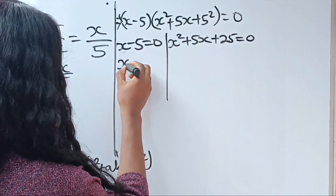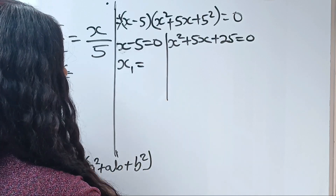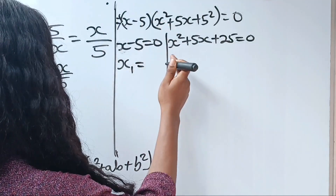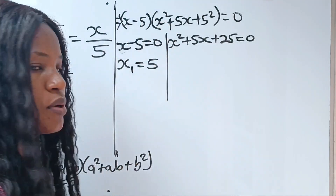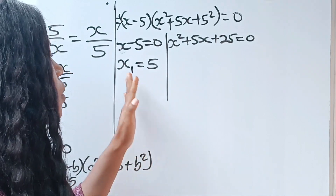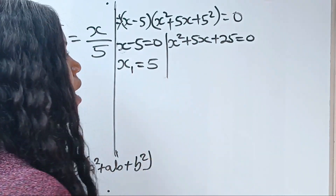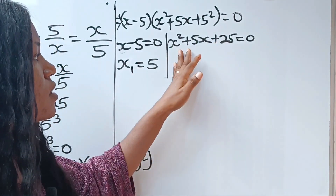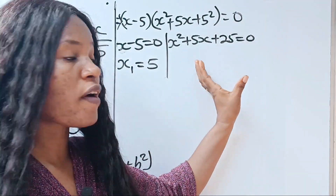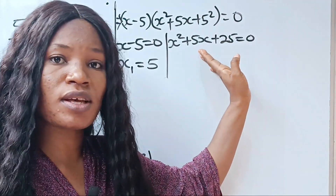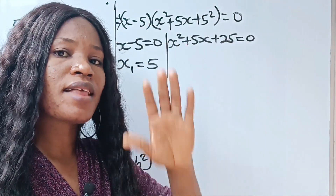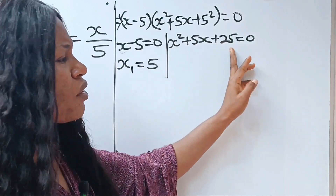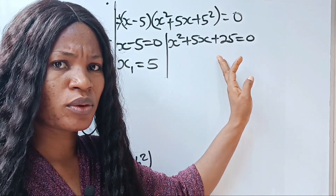From here we can see that x minus 5 equals 0, so this minus 5 crosses to become plus 5, giving us x equals 5 as the first value. Now we are going to use the quadratic formula to find the remaining values of x for the quadratic equation, because we cannot solve it using the factorization method.